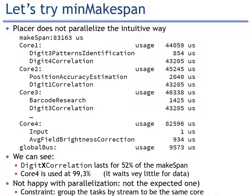Let's ask Placer to minimize the makespan. Surprisingly, Placer does not parallelize in the intuitive way. As you can see, there are four cores — core 1, 2, 3, and 4 — and there are tasks called digit 3 and digit 4 on core 1. It means that out of the four instances of the red tasks, tasks from stream 3 and stream 4 are both located on core 1. So there is no intuitive one-stream-per-core assignment chosen by Placer, which is quite unexpected.